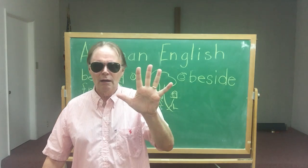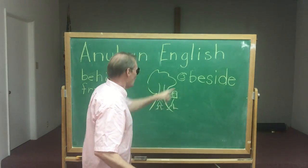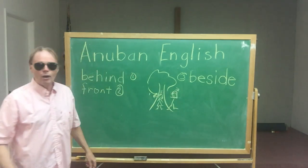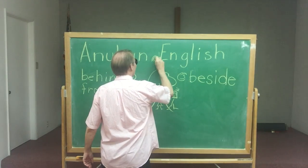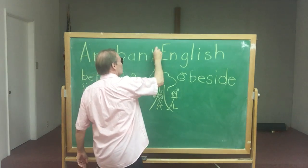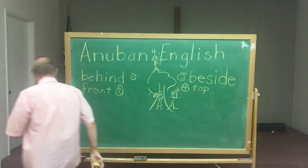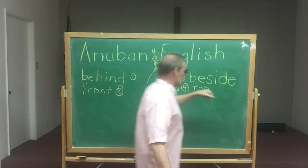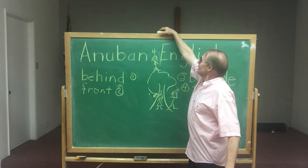Number three, right? We have number one right here, number two, and number three. Now I've got another one we're going to do. We have up here — what's that one? Number four is what? She's on top! T-O-P. So: behind the board, in front of the board, beside the board, and number four — on top of the board. The chalk is on top of the board now — and it broke! Now I have two pieces of chalk.